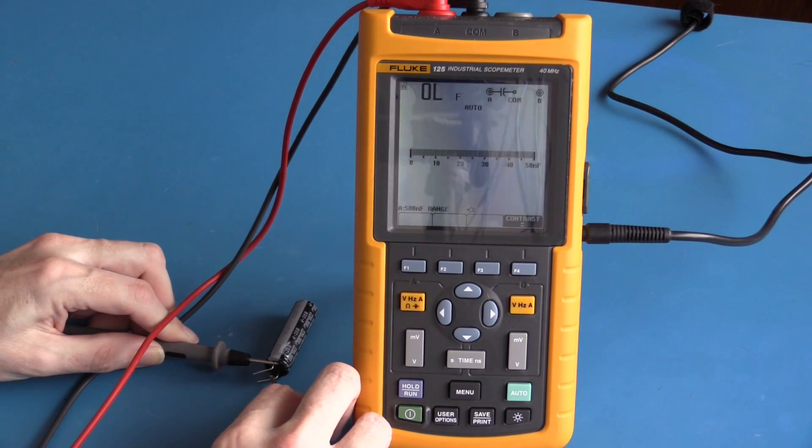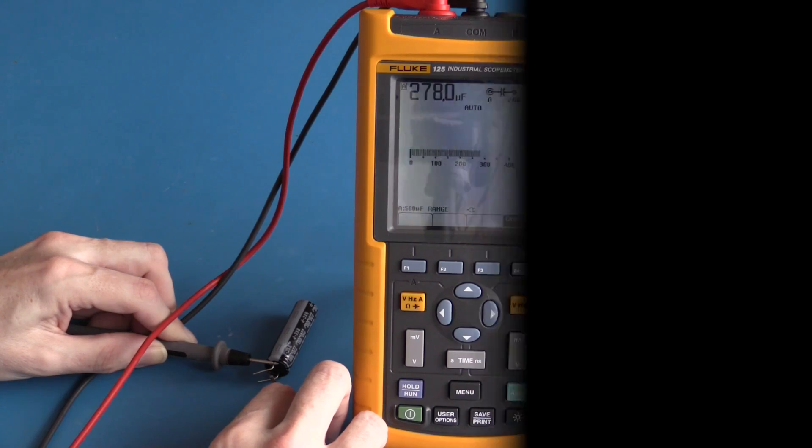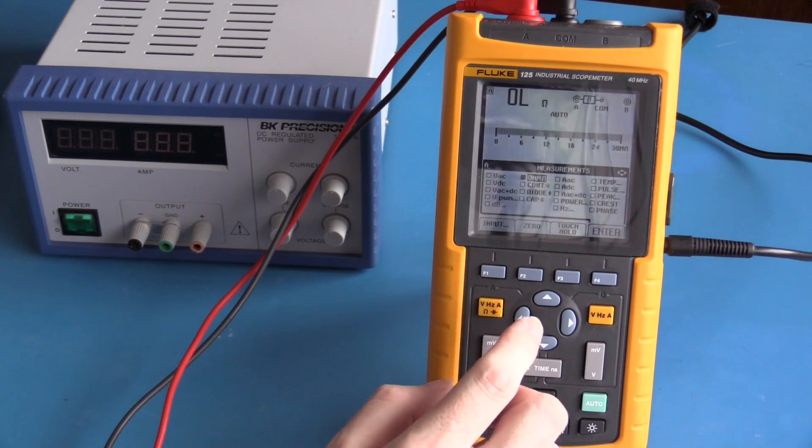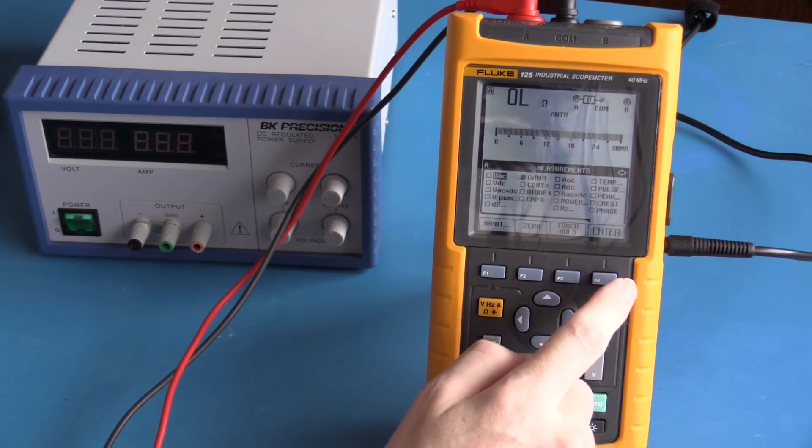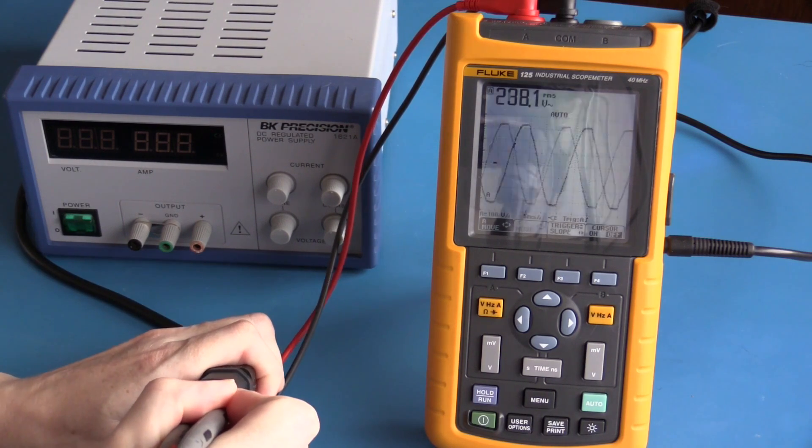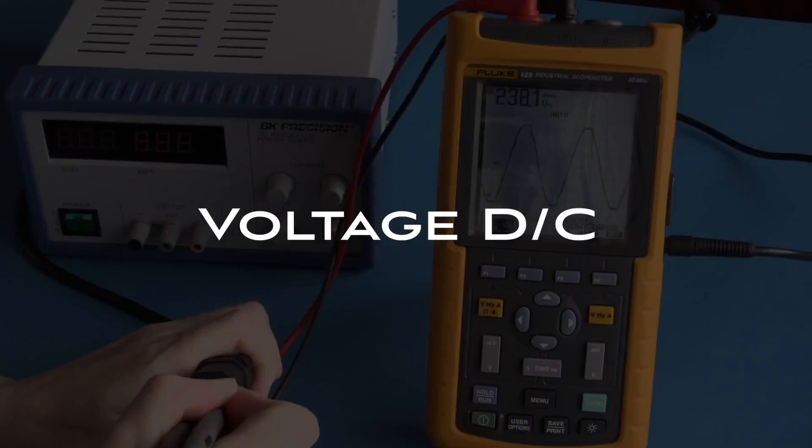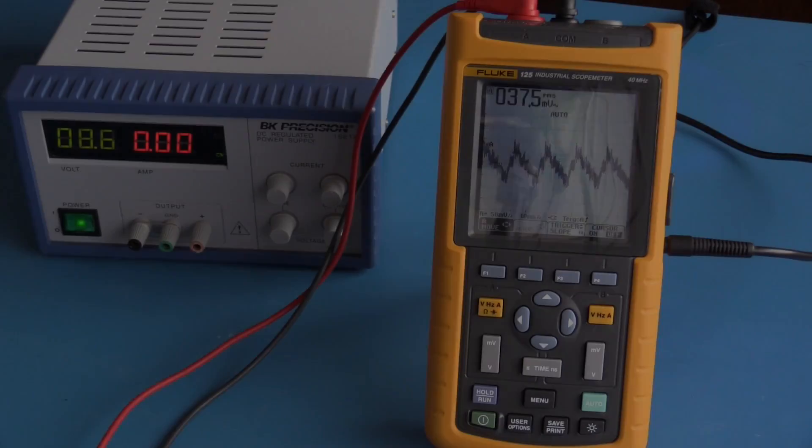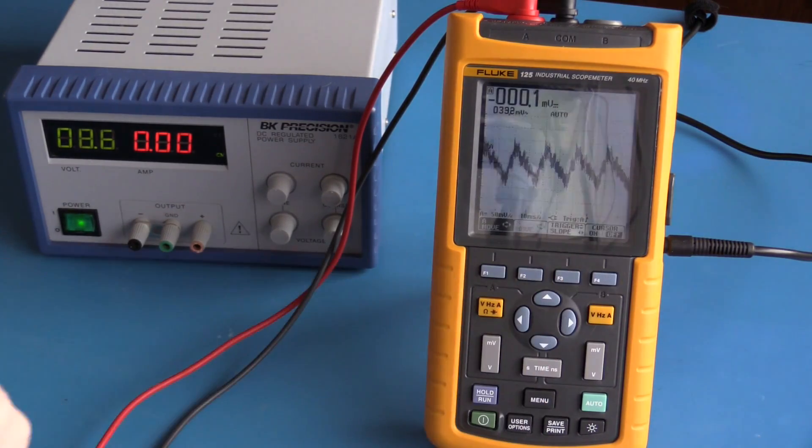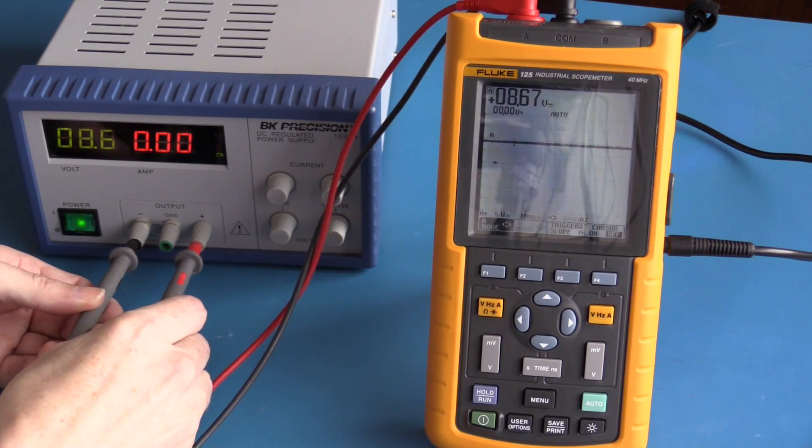To measure AC voltage, we're measuring approximately 238 volts. We can also see the AC sine wave. To measure DC voltage, approximately 8.6 volts.